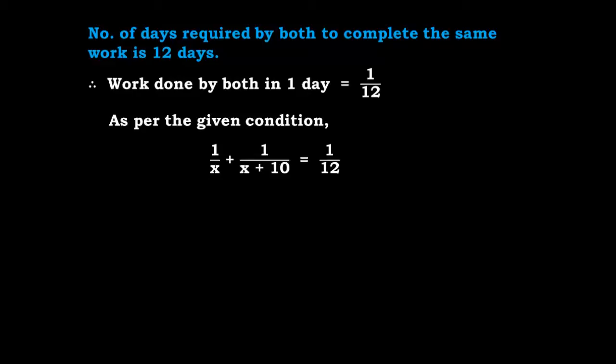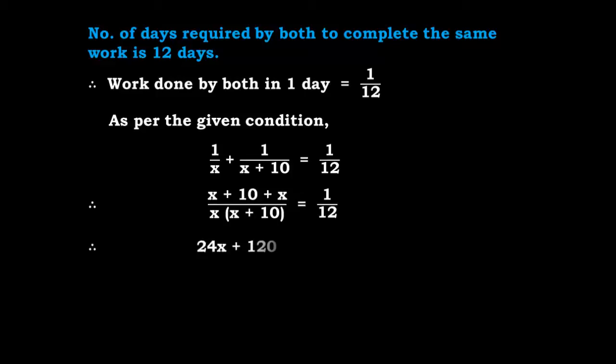Now we can solve this equation by cross multiplication. (X + 10 + X) / (X × (X + 10)) = 1/12, so X + X becomes 2X + 10. Cross multiplying: (2X + 10) × 12 = 24X + 120 = X² + 10X. Now we can convert this to standard form.